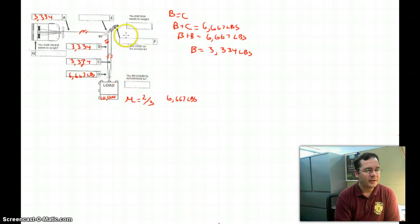Now, if we look at point E, this is a little bit more complicated with what's happening with this anchor. If we were to draw it out with vectors, we have a force to the left of 3,334 pounds and a force down 3,334 pounds. So how do we solve this problem? We slide the vectors head to tail.